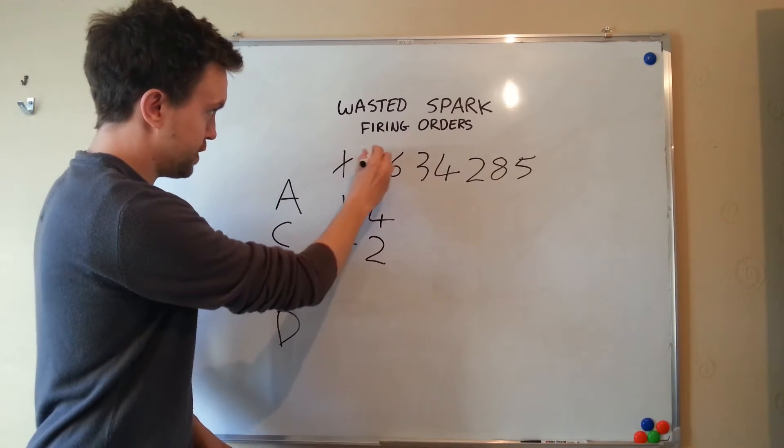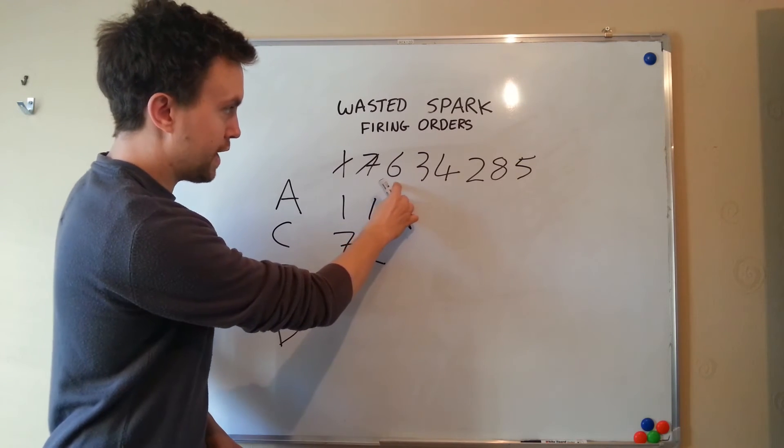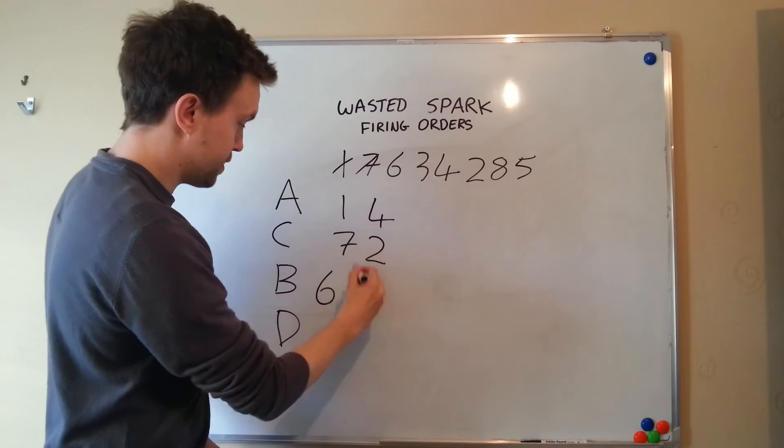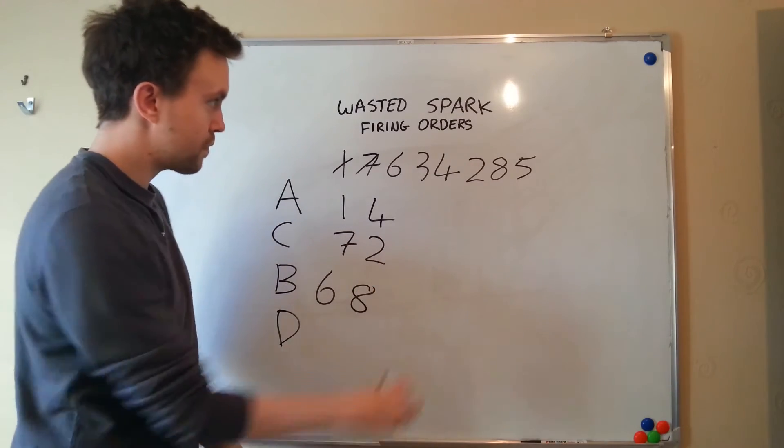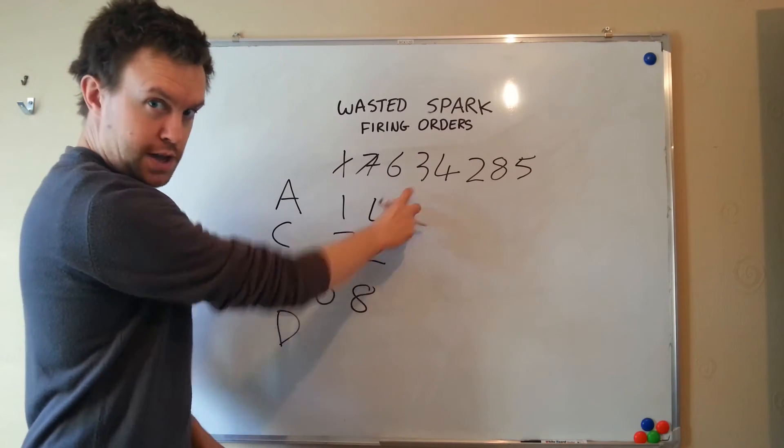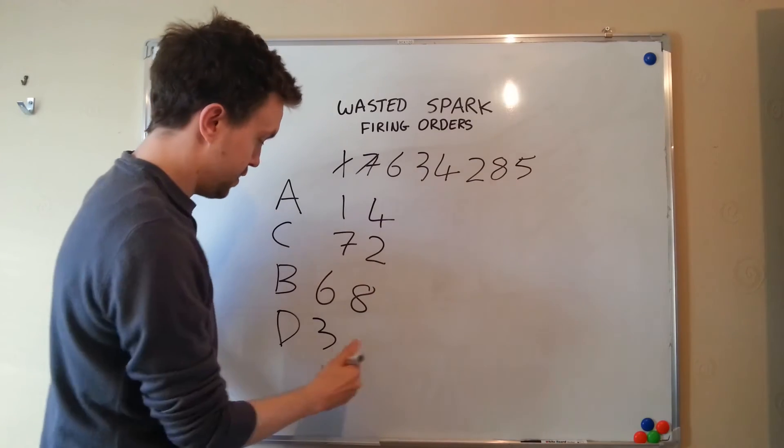B, it's time to do six. We can put a line through these as we go. It's time to do six. Again, we're going to go four along, one, two, three, four. Here we are at coil eight. We're going to fire eight. And again, D is number three. I'm going to write number three down there. We're going to go all the way along obviously to the end, number five.